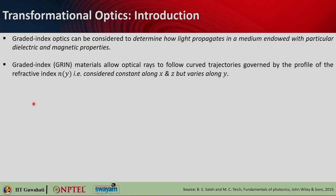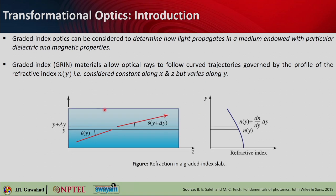Let us first start with graded index material and see what happens there. In graded index materials, or GRIN, they allow optical rays to follow curved trajectories governed by the profile of the refractive index. The refractive index is considered constant along X and Z, but it only varies along Y. Here the refractive index varies only along the Y direction, and as you can see, a ray can get bent from this interface at a different angle.